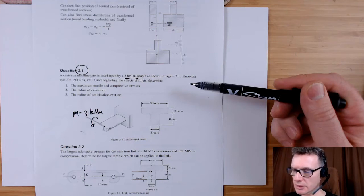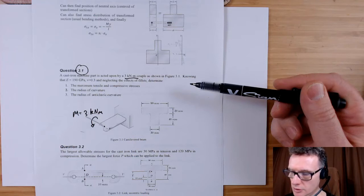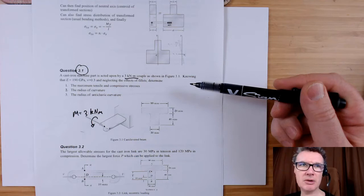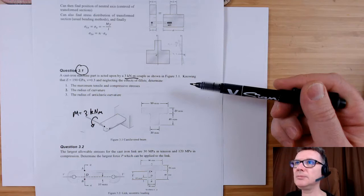For area one, we've got dimensions 30 by 40, so area one is going to be 1,200. Area two, here we've got 90 by 20, so that works out to be 1,800.